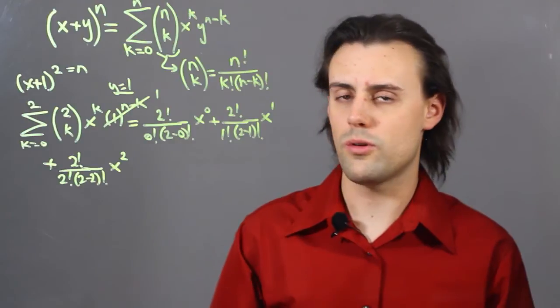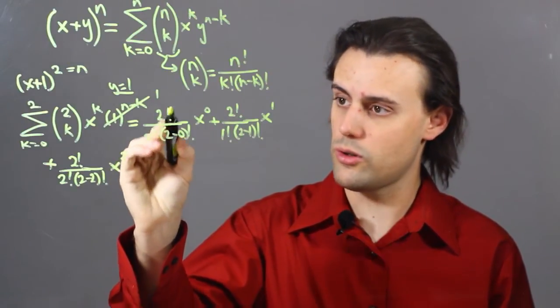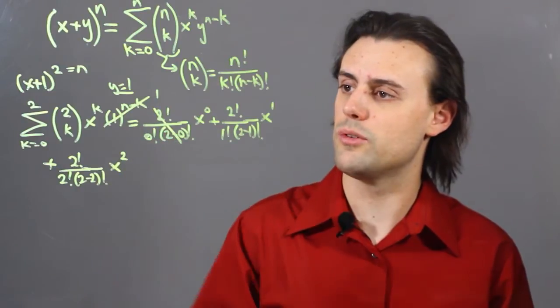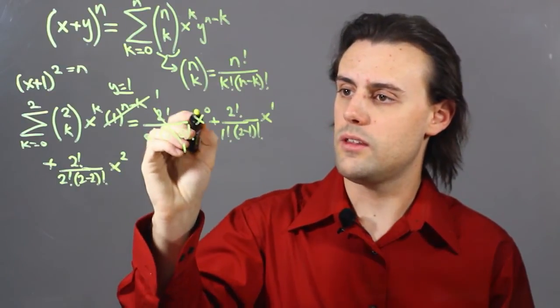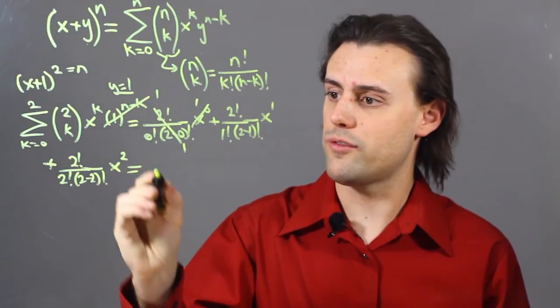0 factorial, of course, is equal to 1, so I'm going to have 2 factorial over 2 factorial, and this is equal to 1. x raised to the 0 power is equal to 1. So, for my first term I get 1.